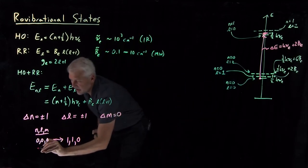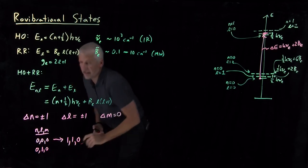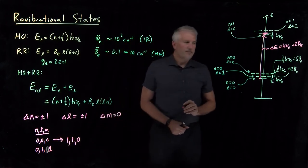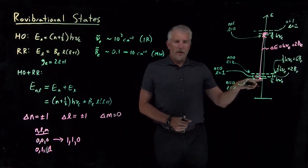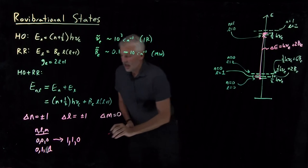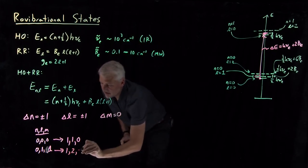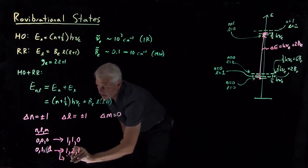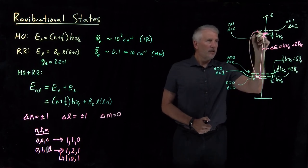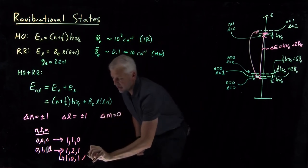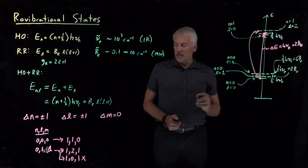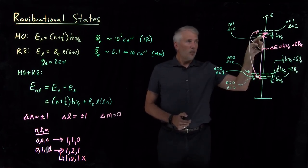As another example, let's say we start in the m equals 1 state with ground vibration and one unit of rotational excitation — the 0, 1, 1 state. We're allowed to make a transition up 1 in n, up 1 in l, keeping m the same. Or we could go up 1 in n, down 1 in l, keeping m the same. However, going down to l equals 0 with m equals 1 is not possible — there is no m equals 1 when l equals 0. So the only allowed transition from the 0, 1, 1 state is to the 1, 2, 1 state.